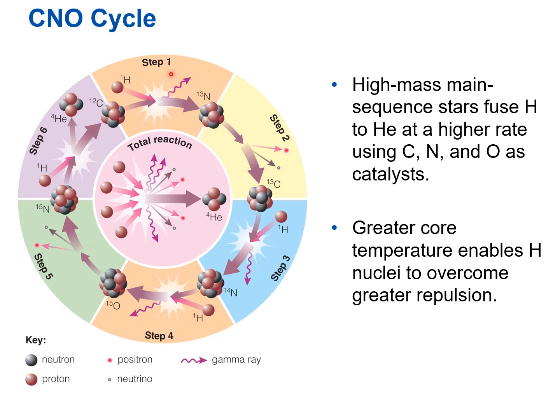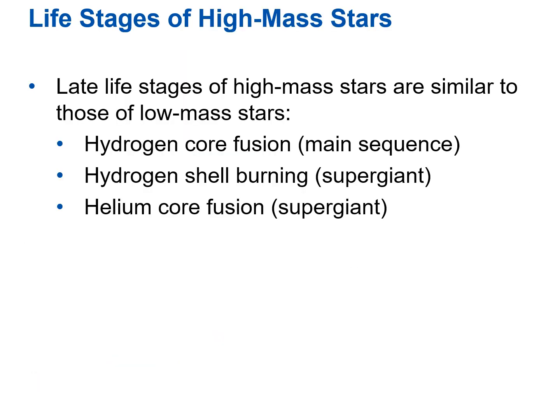Looking at what went into the CNO cycle: four hydrogens went in, and what came out was a helium-4. So the overall reaction of the CNO cycle is that four hydrogens become one helium — the same overall reaction as the proton-proton chain.